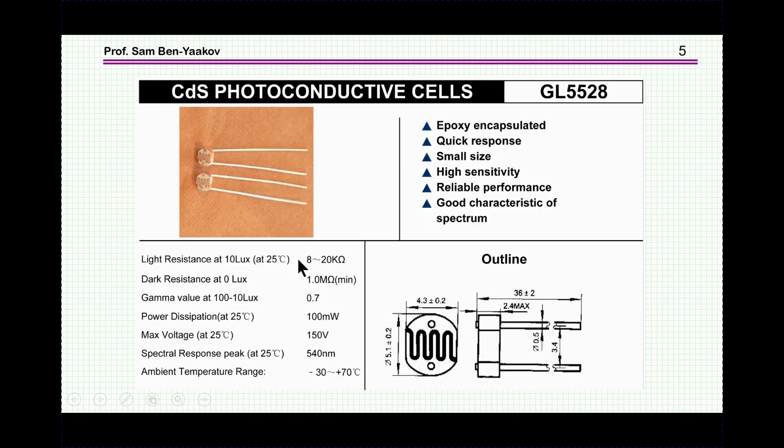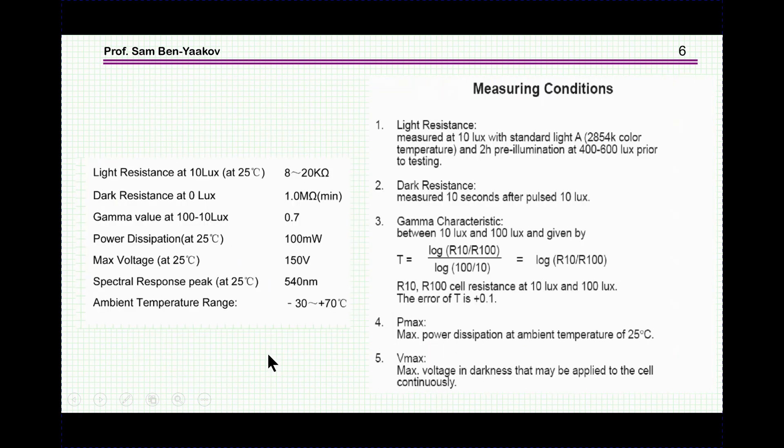Here is the typical unit. This is the commercial unit, and here are the specs. I'll go over the specs. It says the light resistance at 10 lux, which is about one foot candle, is 8 to 20 kilohms.